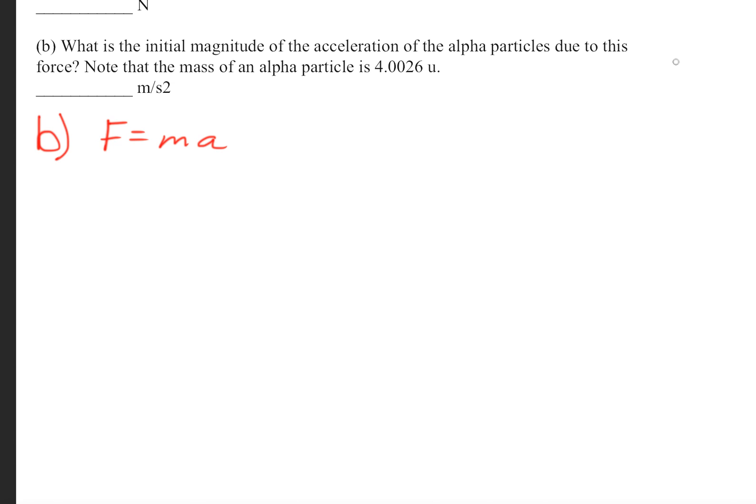So in order to solve part B, we're going to use Newton's second law, which is the force is equal to mass times acceleration. So we know what the force is. We found that the force was 36.8 newtons. We know the mass, and we're given that the mass is 4.0026 atomic mass units. That's what this letter U stands for, it's the atomic mass unit.